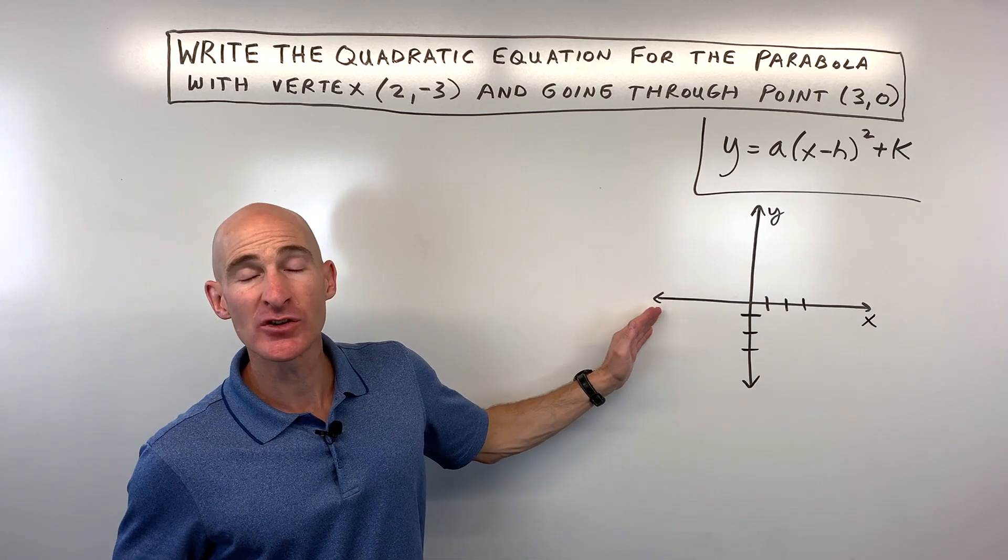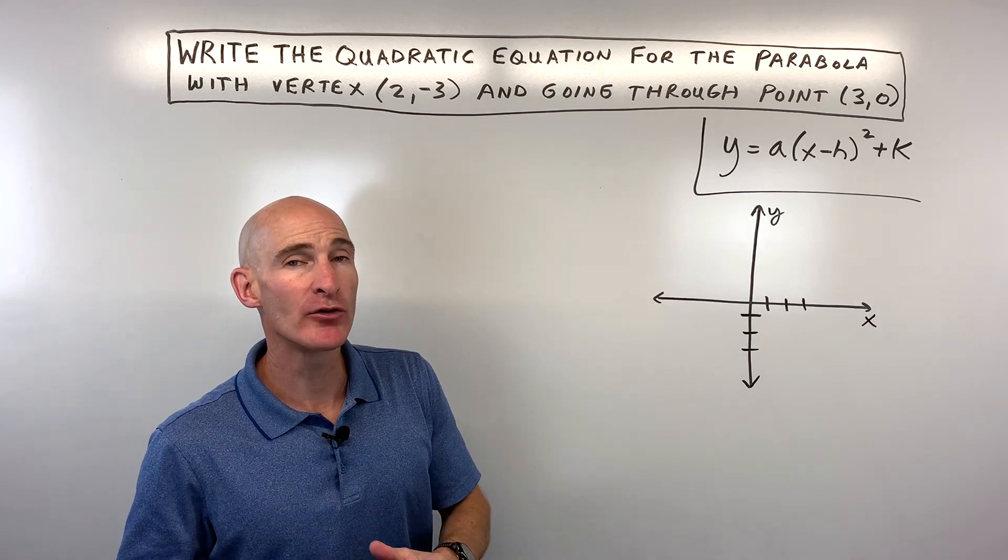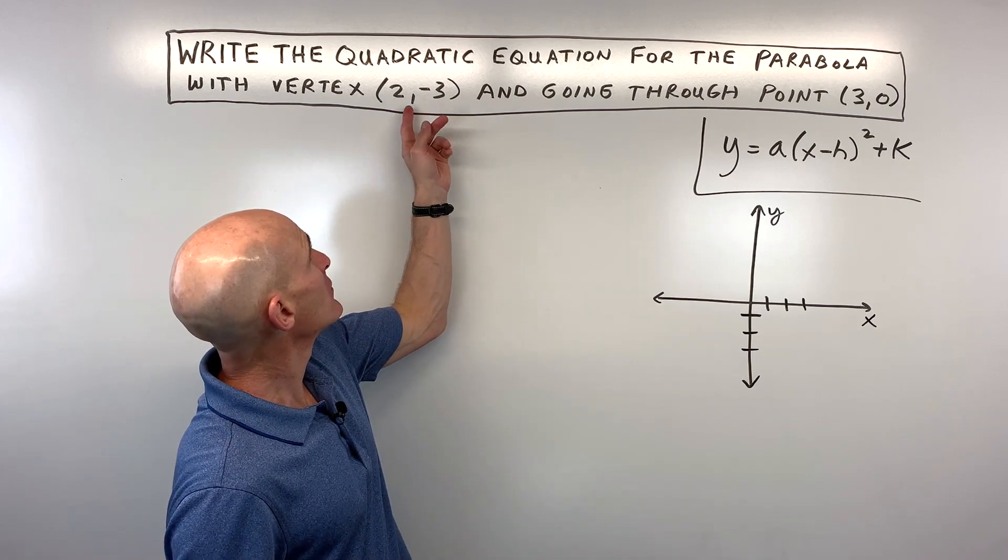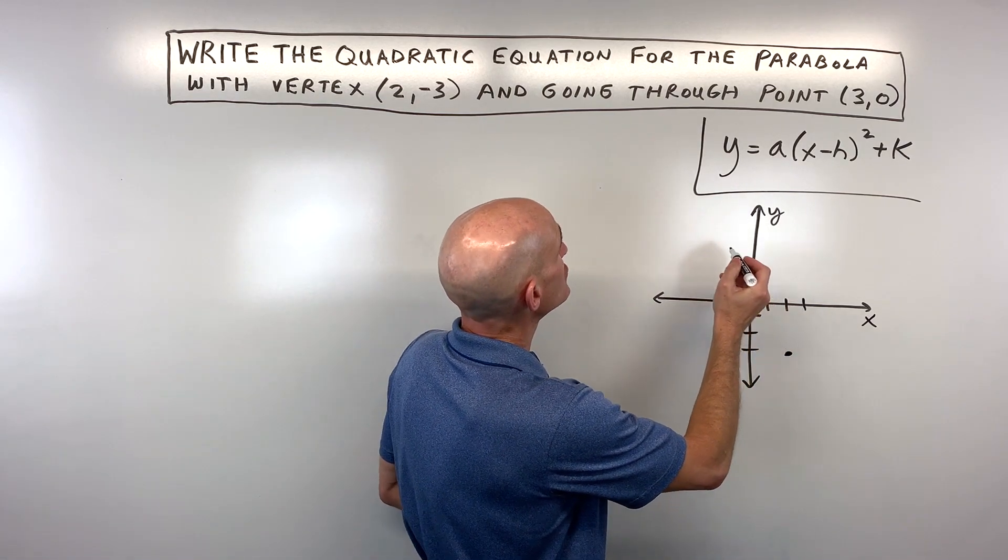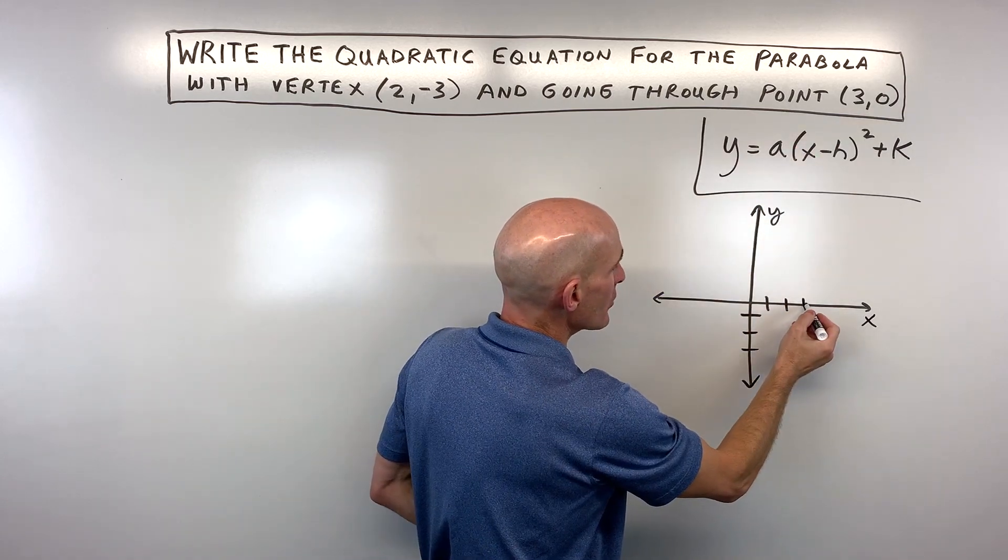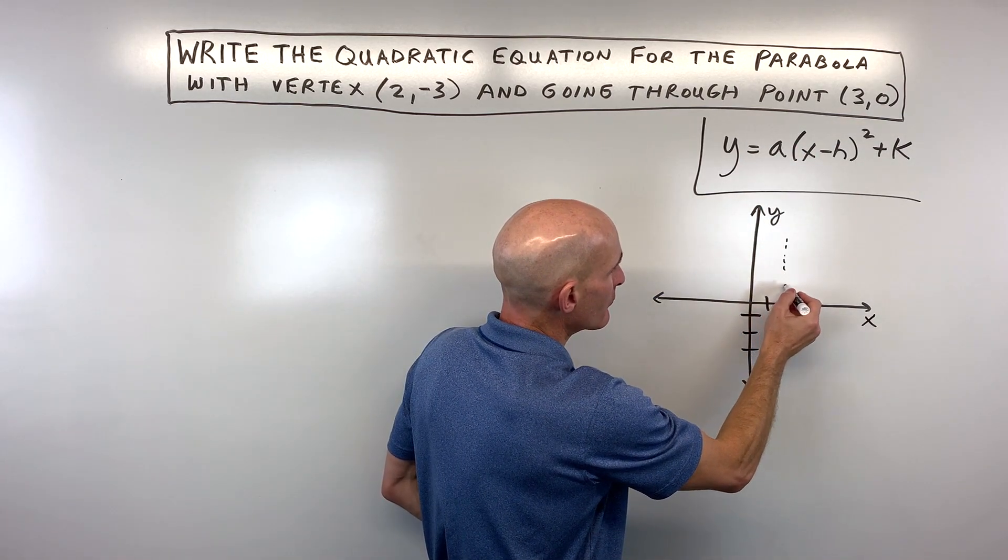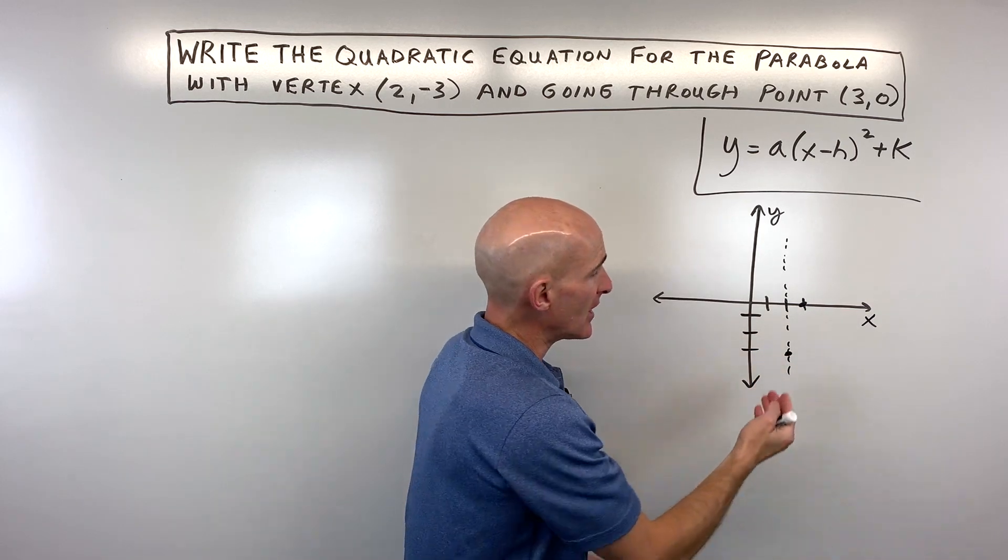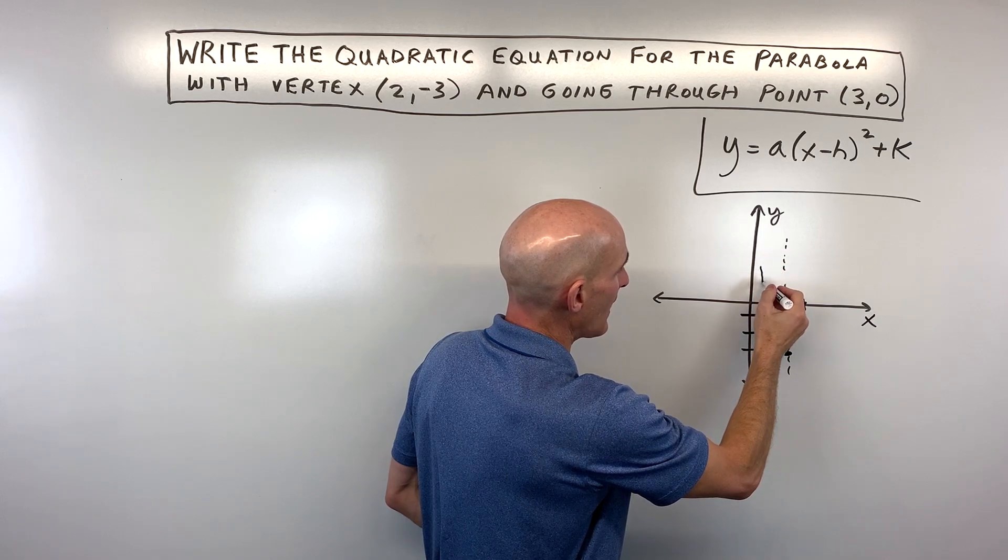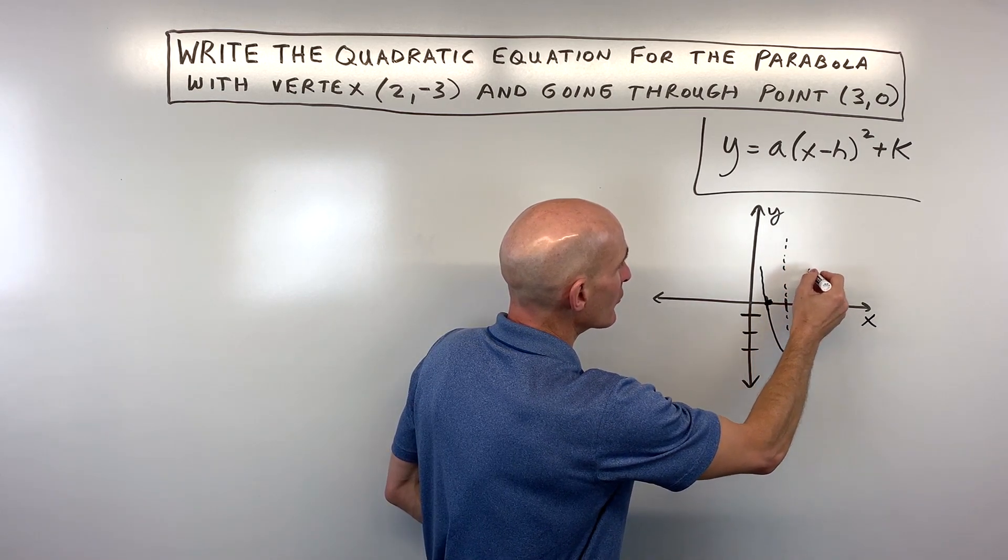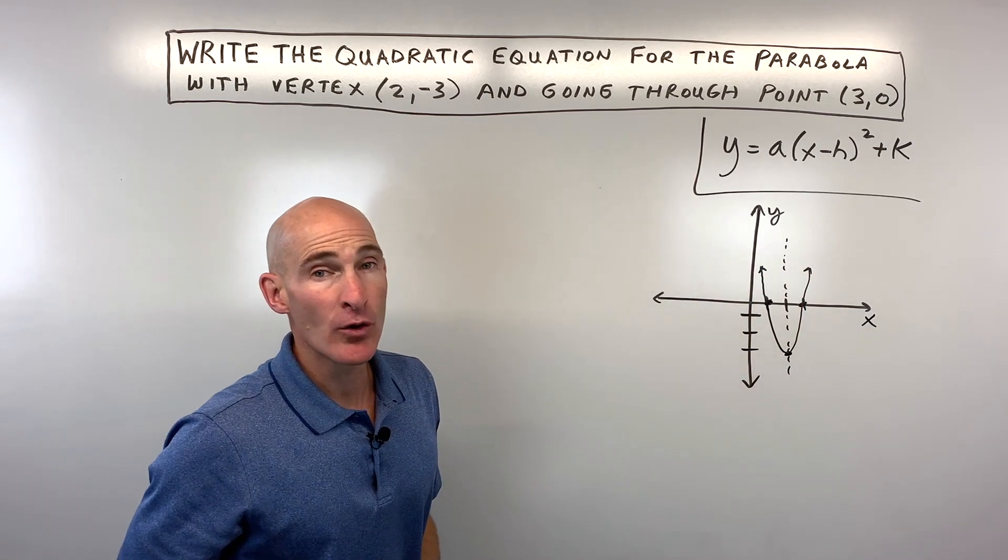And so if we're going to solve for this equation, sometimes what I like to do is just draw a little graph to visualize. So we have a vertex here at (2, -3), and it's going through the point (3, 0). And remember that parabolas are symmetric about that vertex. So if I was to fold this over, I'd have another corresponding point like that. So there is our parabola right there, and we want to get an equation for it.